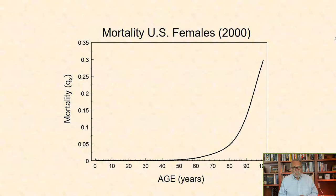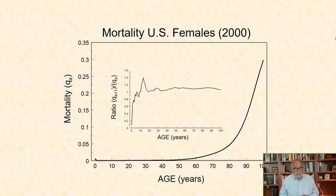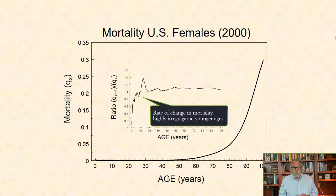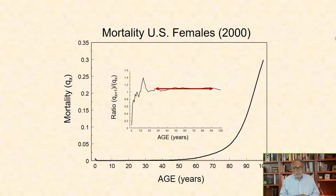When we plot this rate of change as the ratio of Qx plus 1 to Qx over all ages, we see first that it is highly irregular from birth through around age 25 or 30. However, from roughly 30 through 90 years of age, it is remarkably constant. In fact, the ratio is roughly 1.08 or 8% change per year.